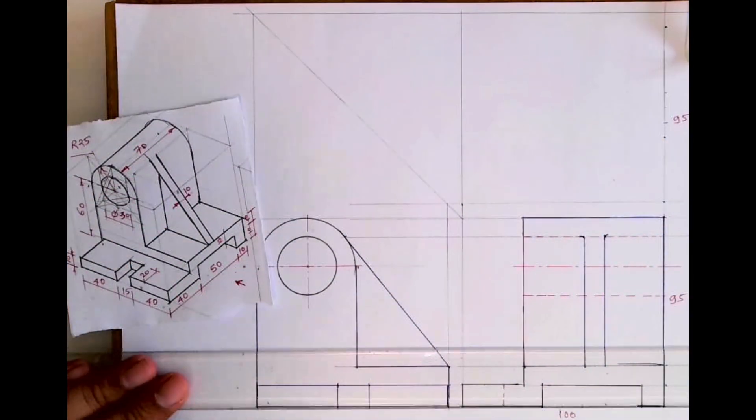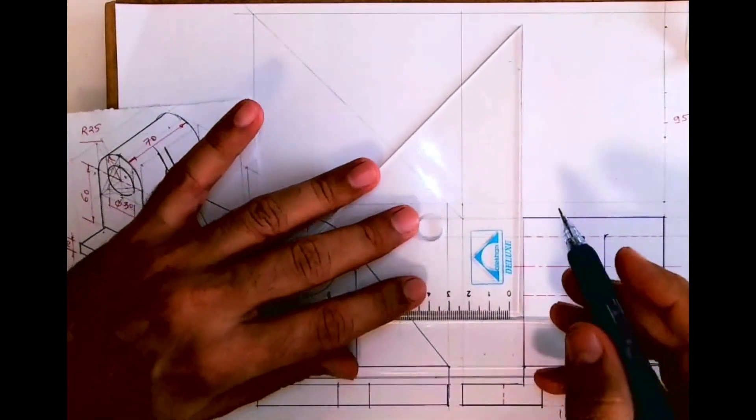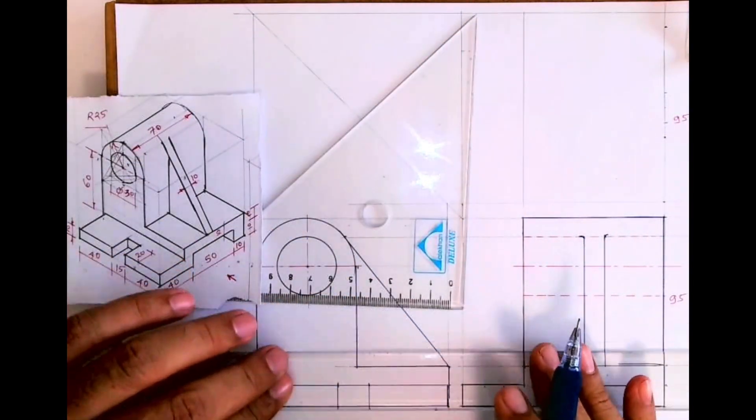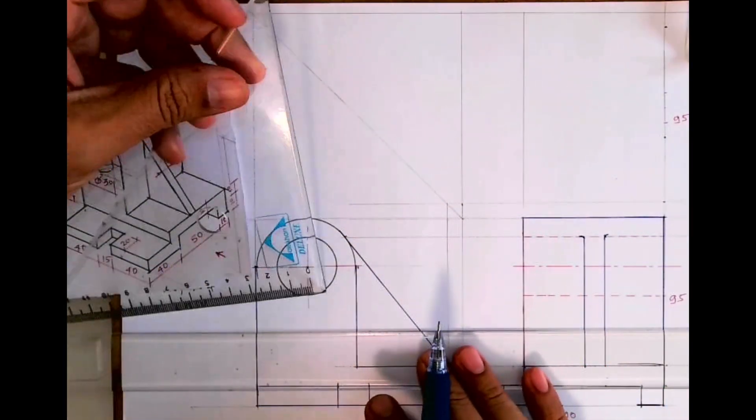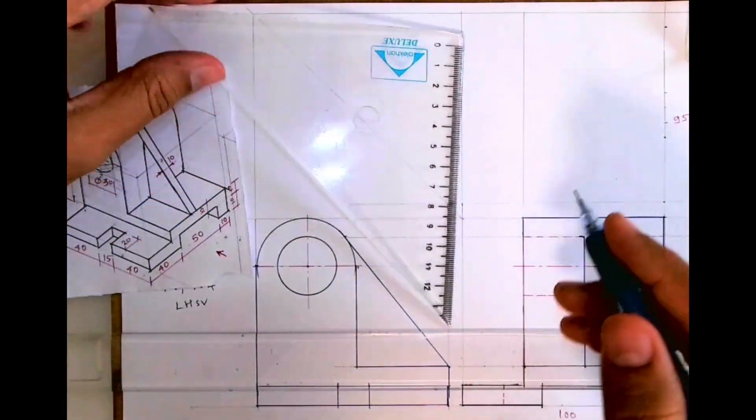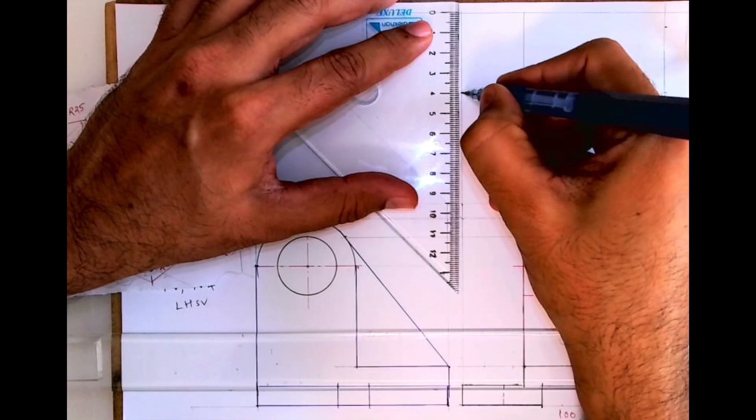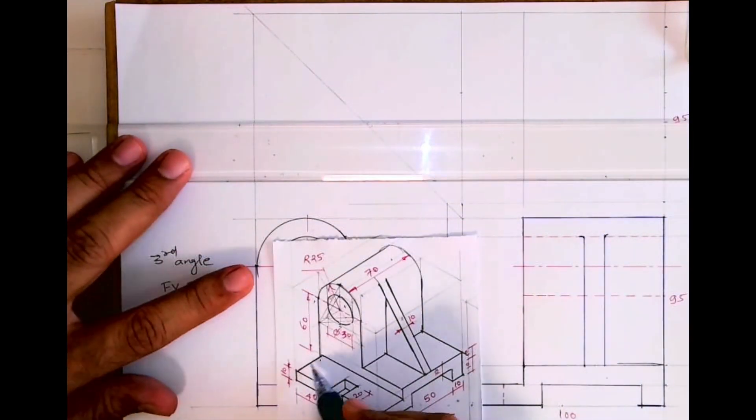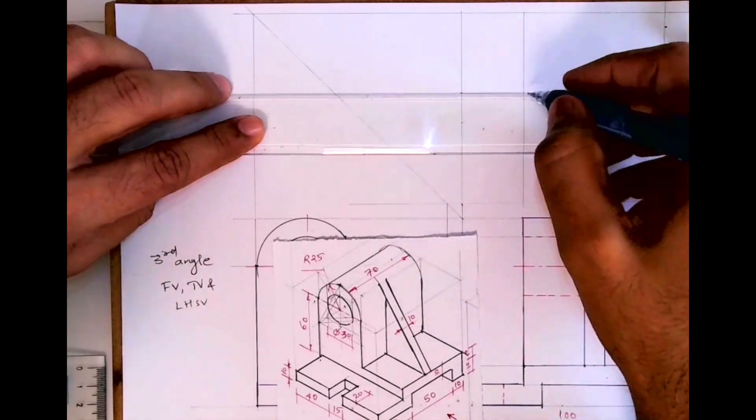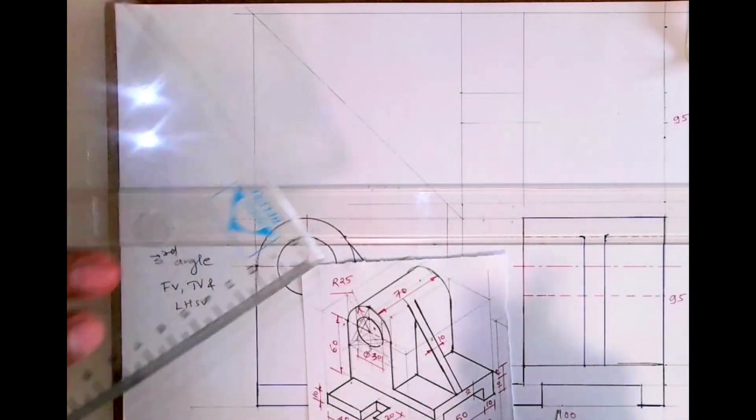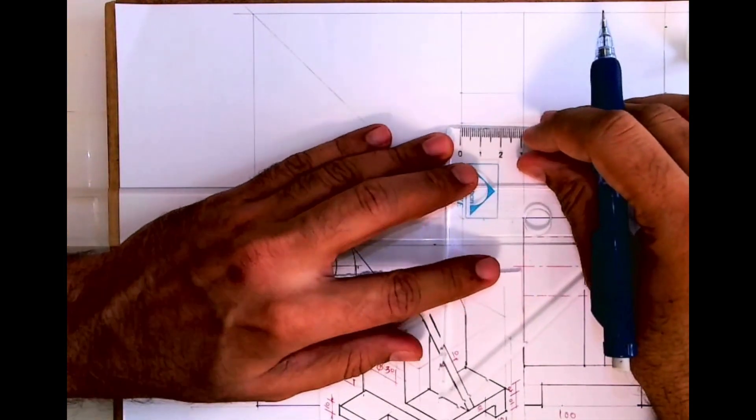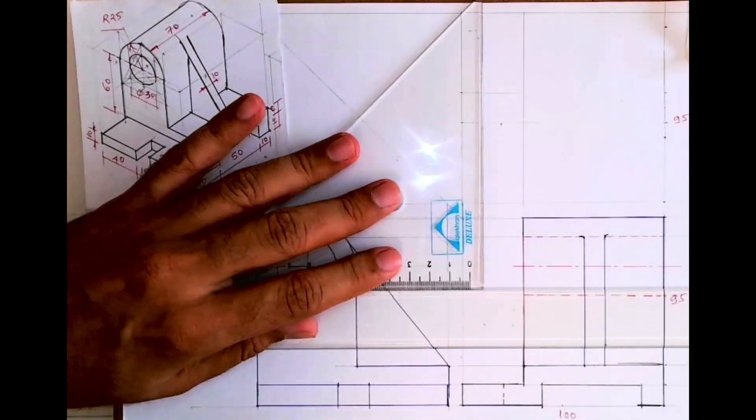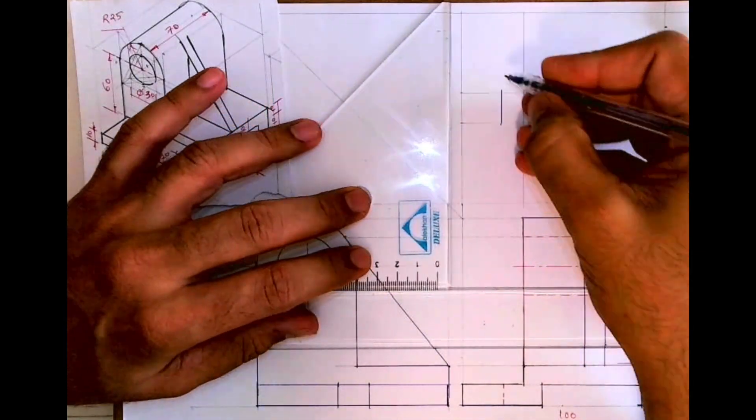Now we need to draw top view. So for top view we will project this. Again we will mark 40, 15, 40. We will draw this part in top view. This will be 20. See this is how it will appear.